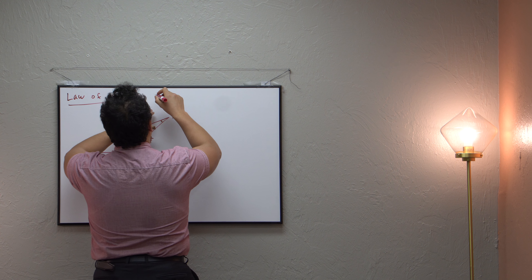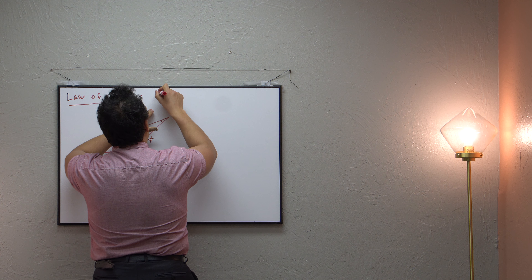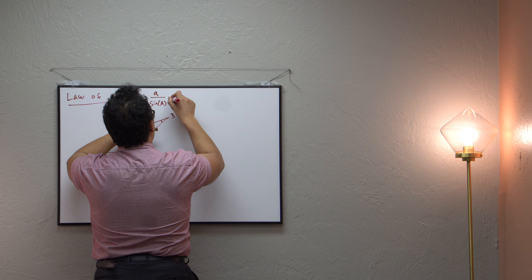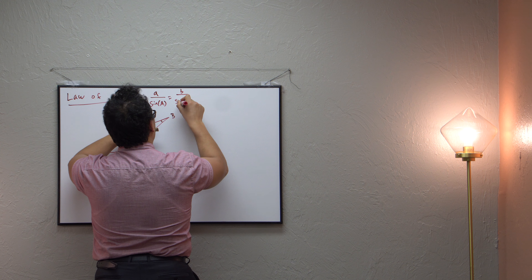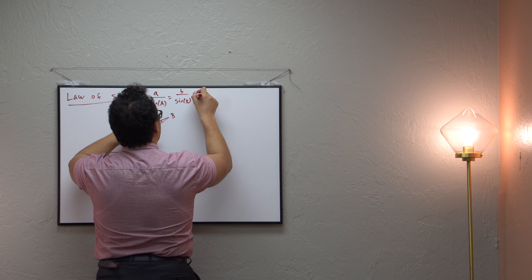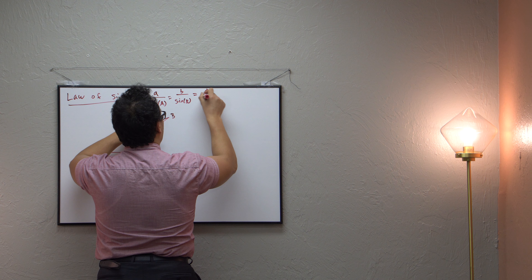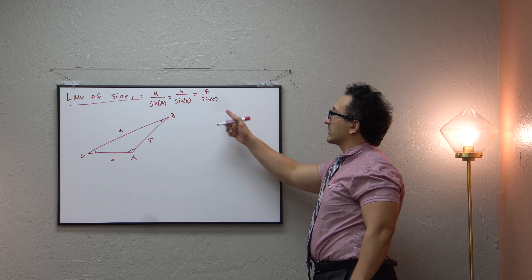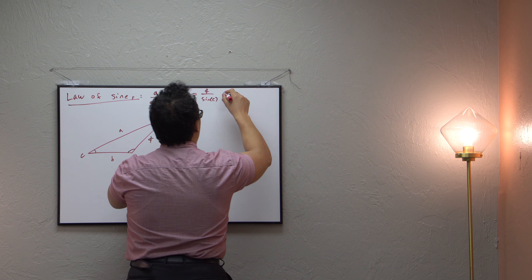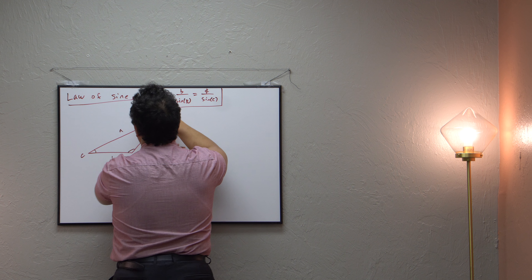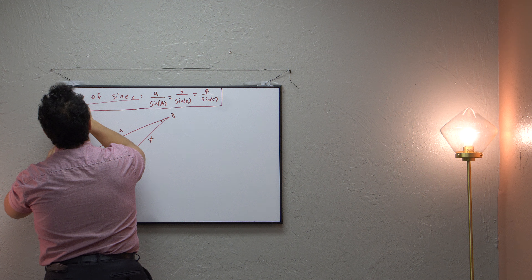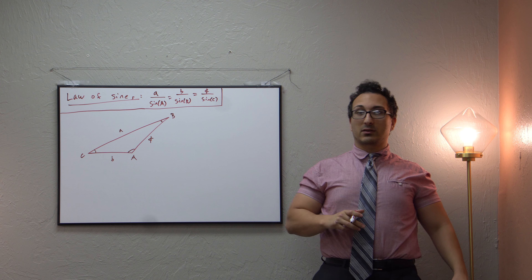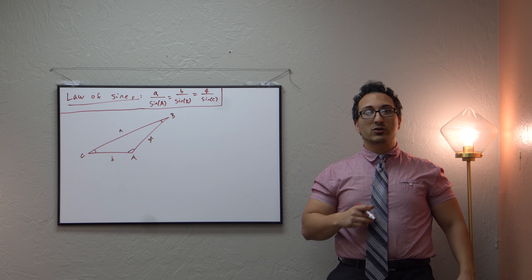And I will explicitly give you what it is. It's a over sine of capital A, is equivalent to b over sine of capital B, which is equal to c over sine of capital C. This is the law of sines right here. However, this video is not about necessarily how to use the law of sines, but where it comes from. So we'll be deriving the law of sines.